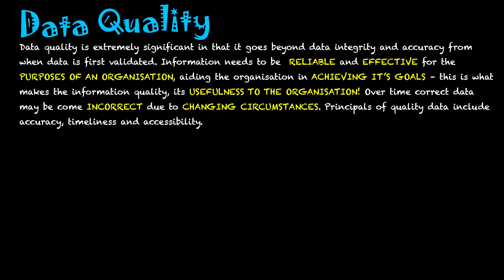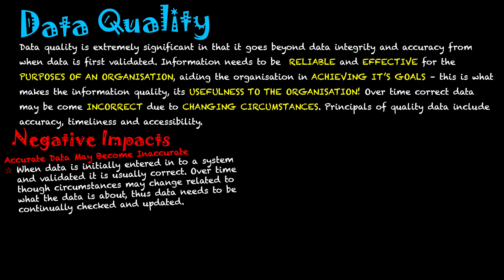Looking at data quality in the context of social and ethical issues — the first negative impact is that accurate data may become inaccurate. We need to make sure that, through the timeliness factor, our data stays correct over time. When data is initially entered into a system and validated it is usually correct, but over time circumstances may change related to what the data is about. Thus, data needs to be continually checked and updated.